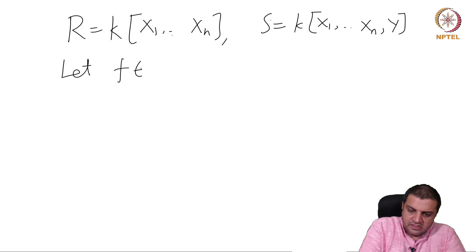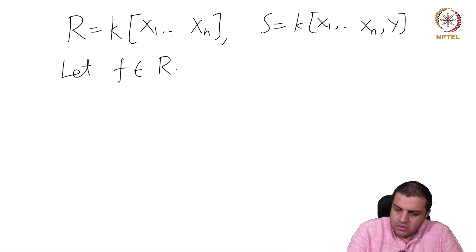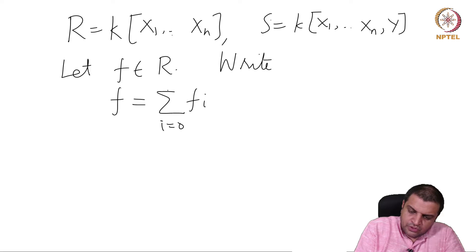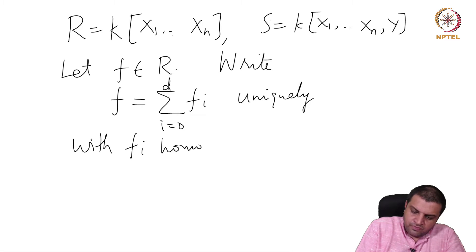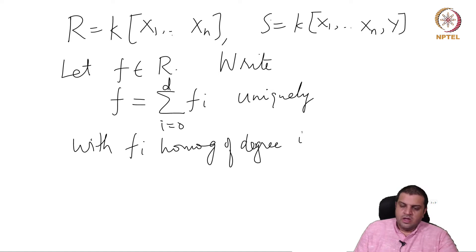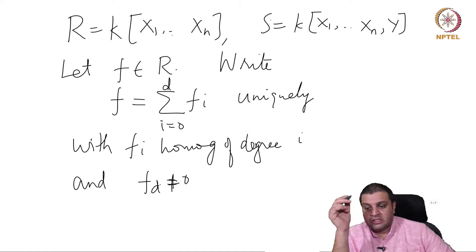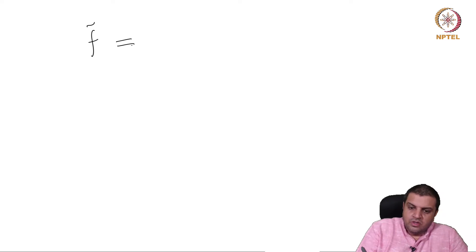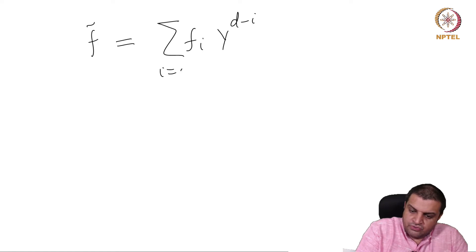Let f be inside R. Write f as a sum of fᵢ, i goes from 0 through d, uniquely, with fᵢ homogeneous of degree i, and f_d not zero. So d is the total degree of f. Define f̃ to be the sum of fᵢ · y^(d−i), i goes from 0 to d.